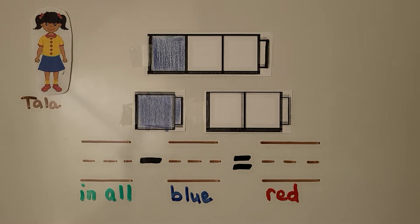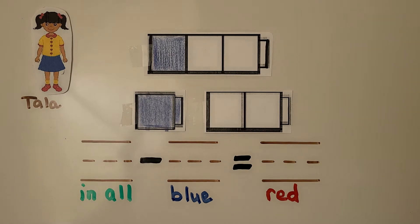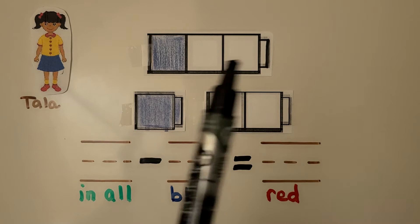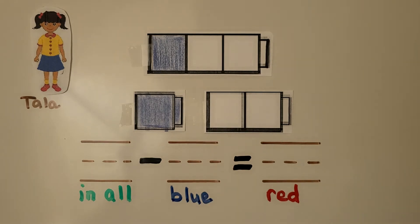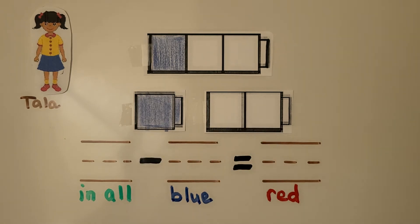Here's Tala. Tala has a cube train of three cubes — one, two, three. One cube is blue and the rest are red. How many of her cubes are red? We take apart the cube train. Here's the one blue cube, so these must be red. We can see how many of her cubes must be red.